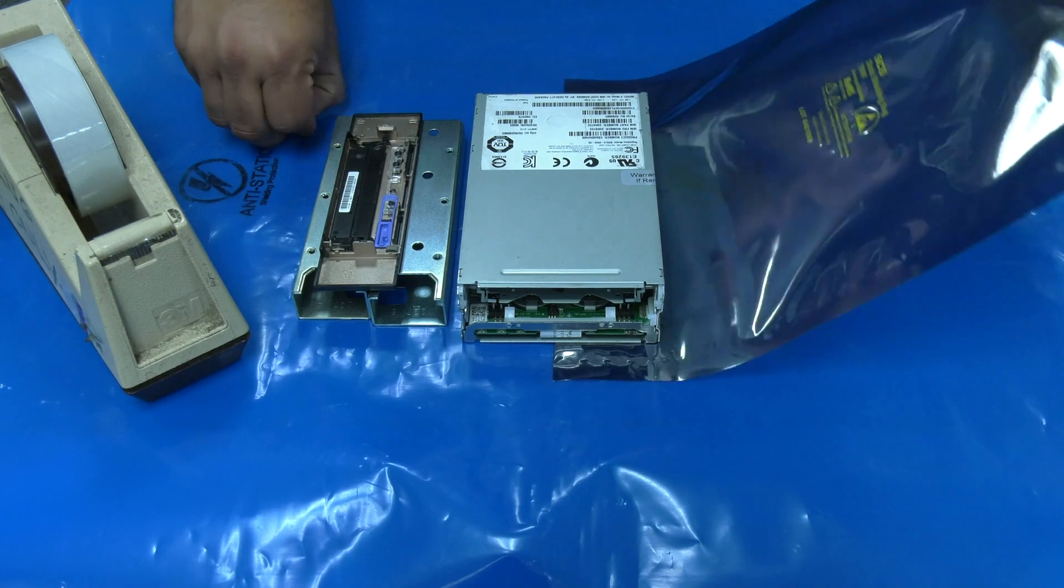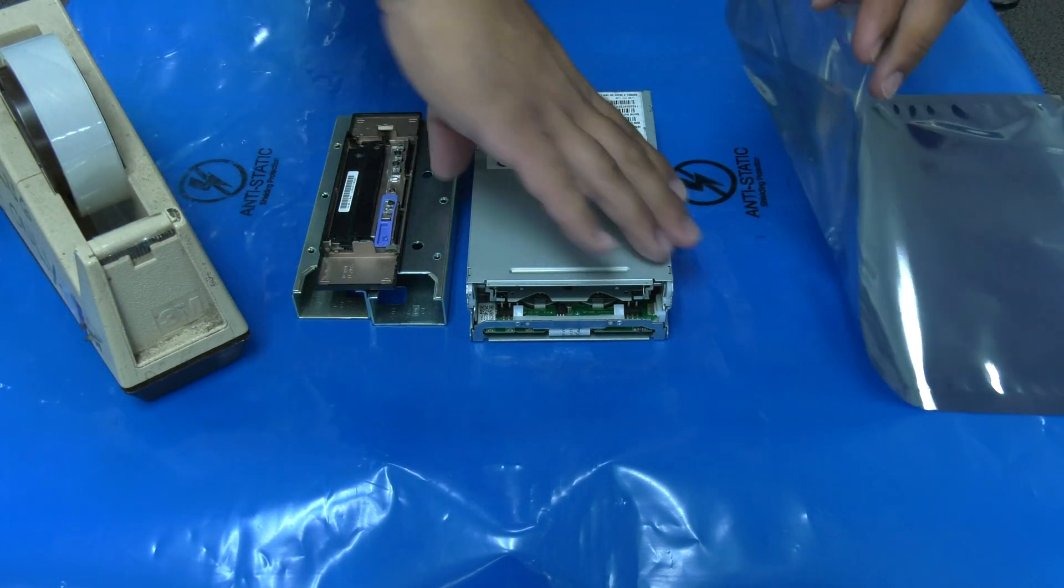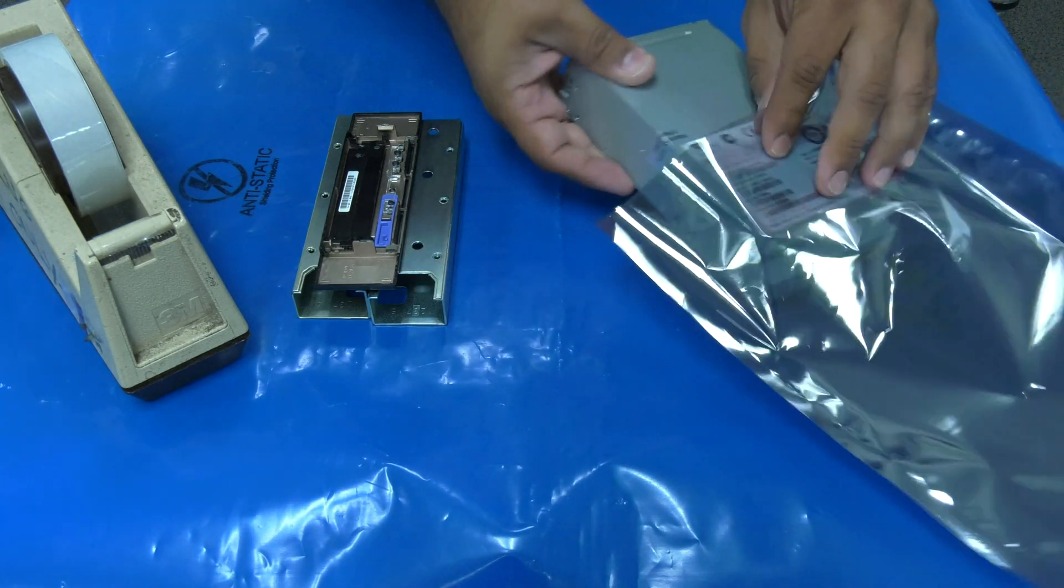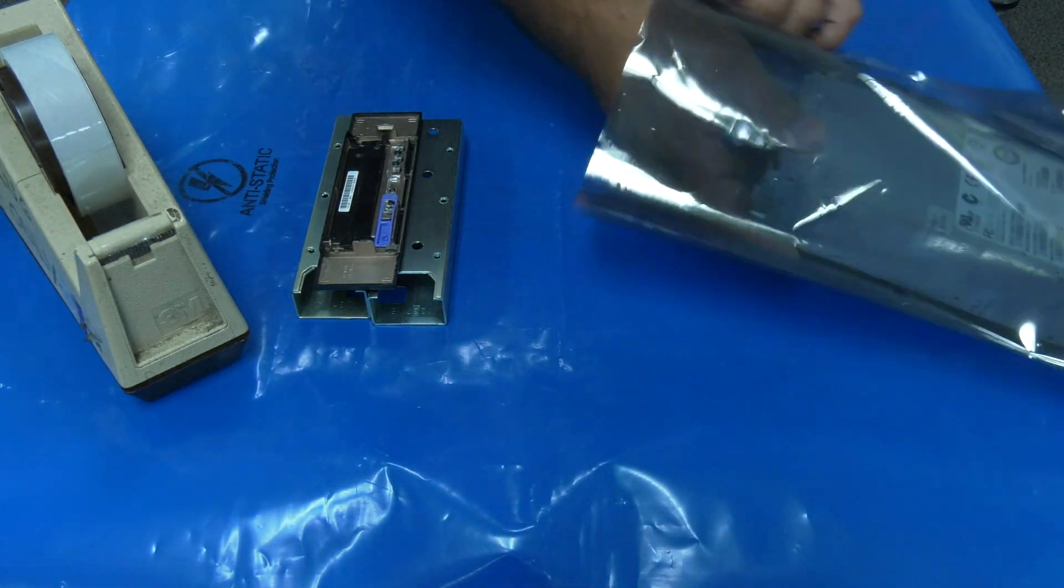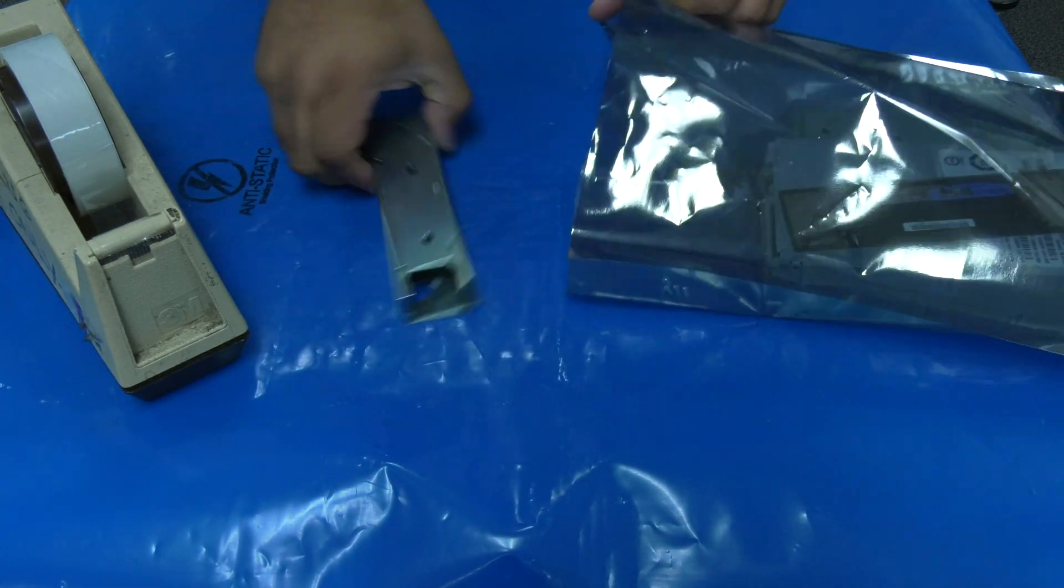If you are returning the defective drive as a core exchange to the Rocket Platform, you do not need to reassemble the drive. Simply place the top cover back on the drive and ensure that all screws and other small parts are included in the anti-static bag with the drive before shipping it back to us.